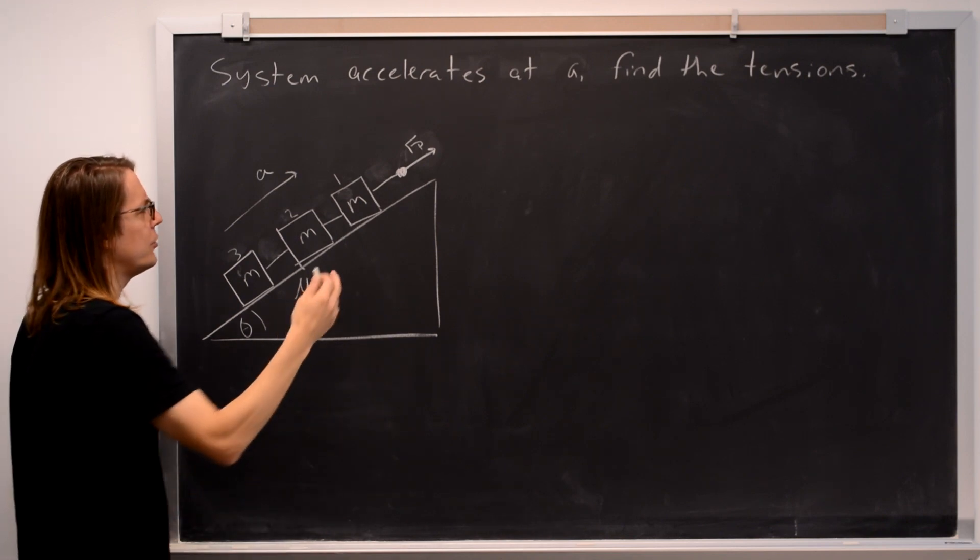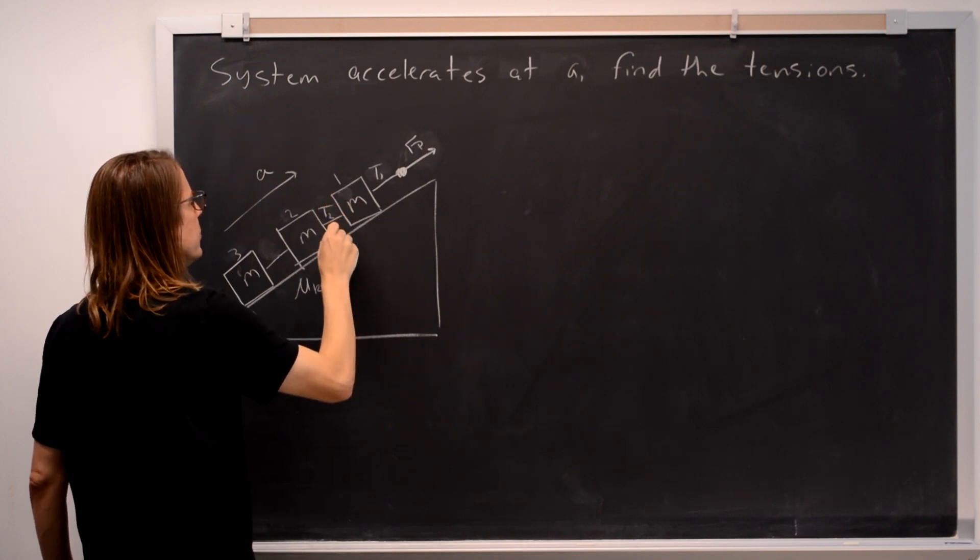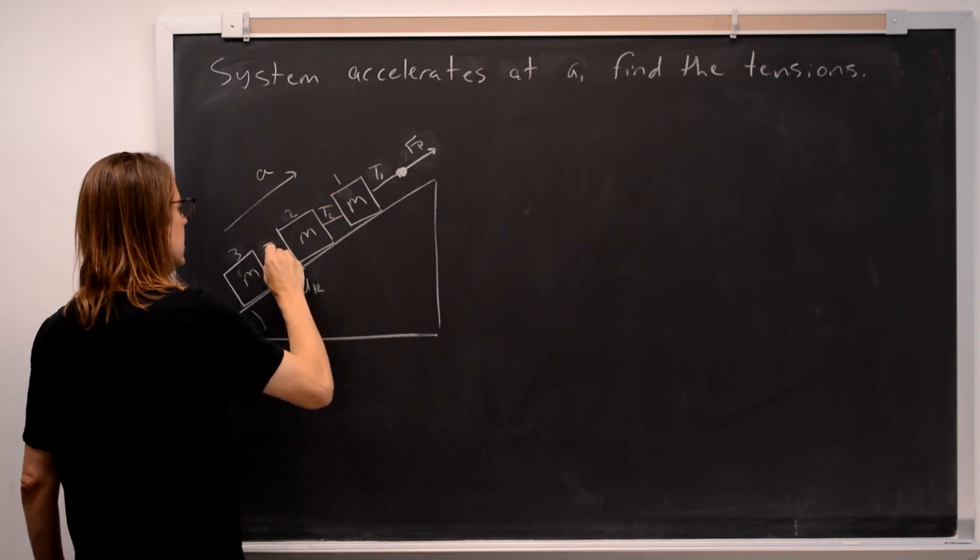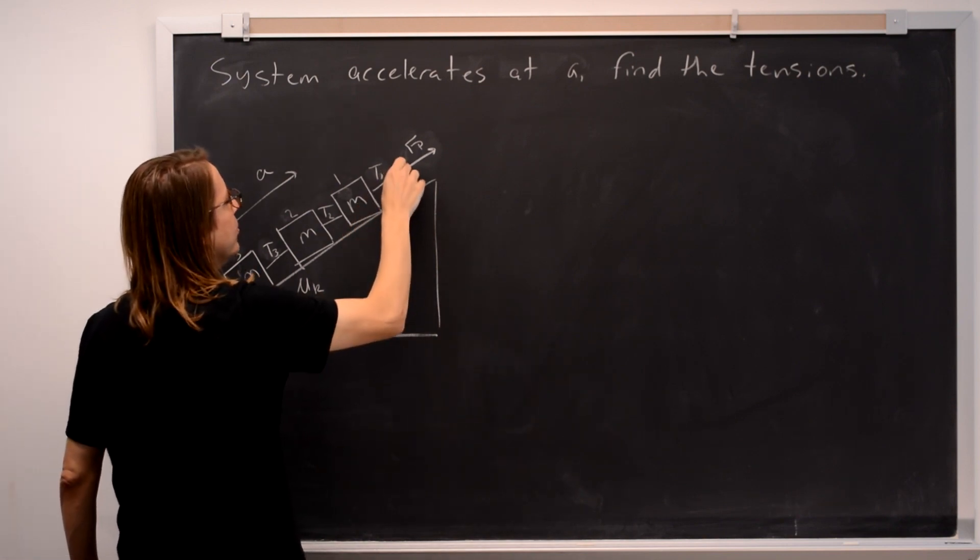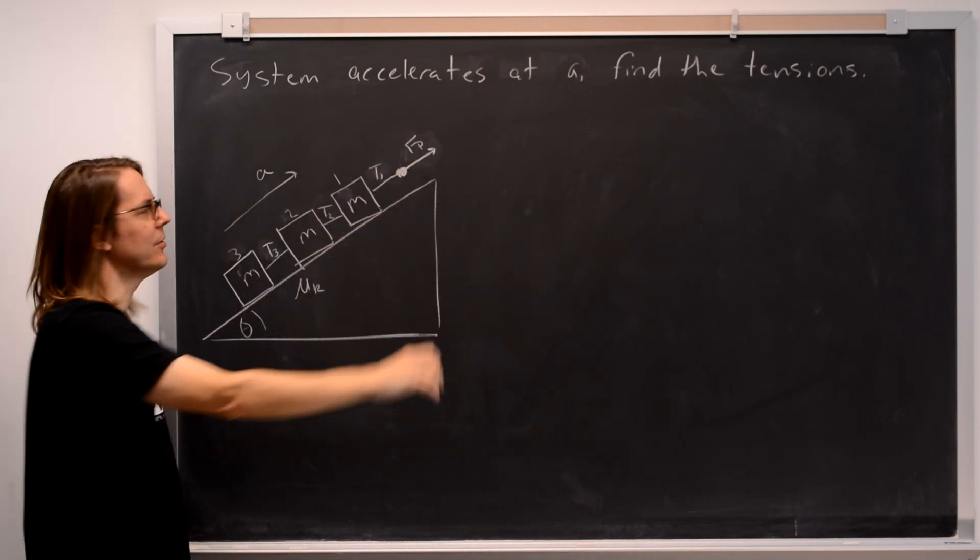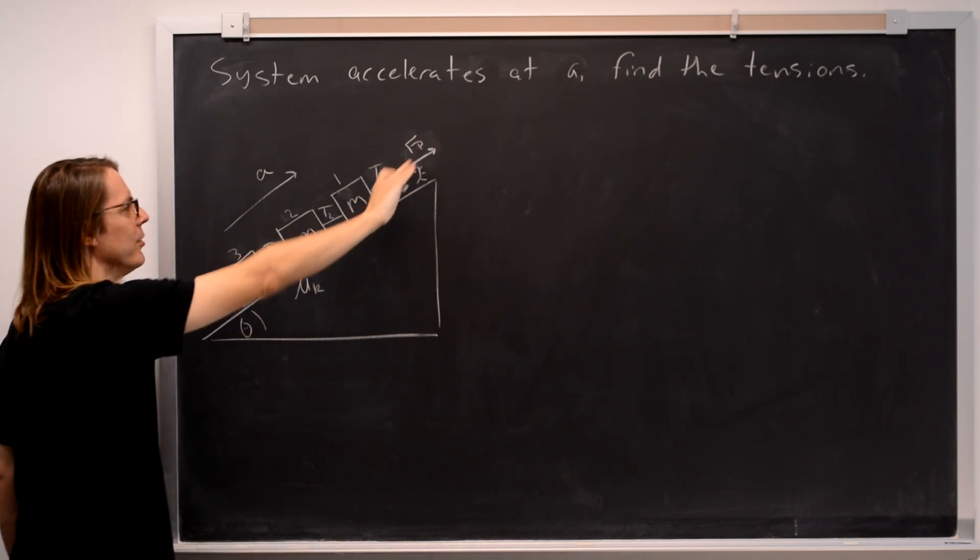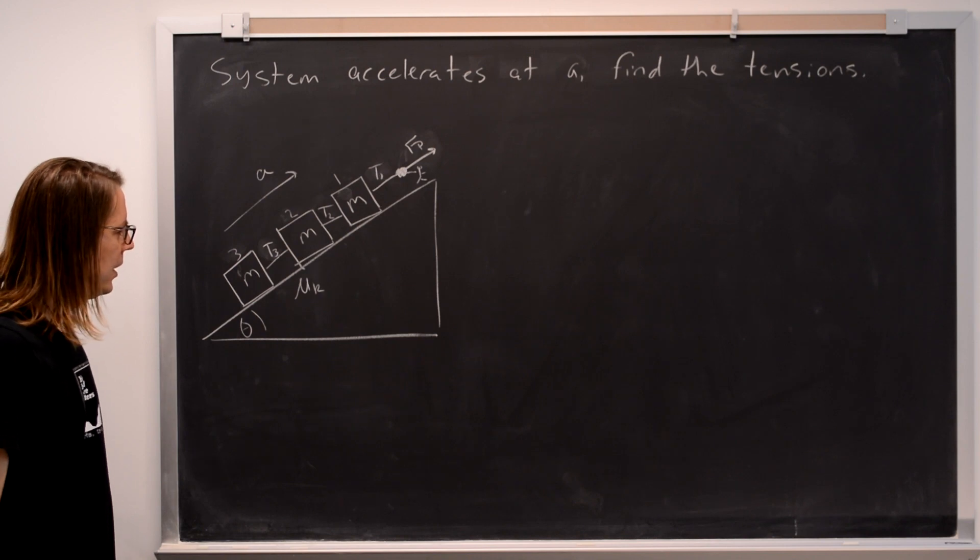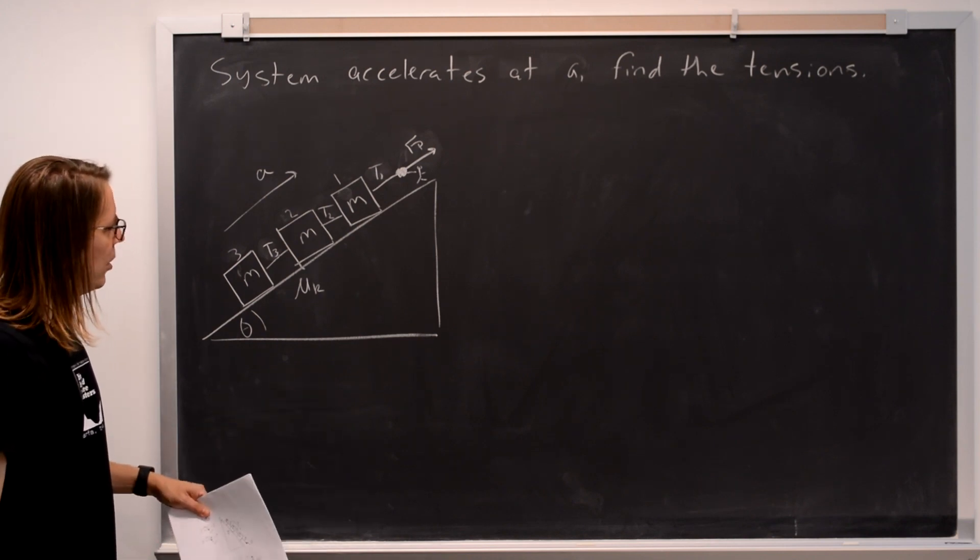And I'm going to go ahead and assume the tensions might be different, so we'll have tension 1 in this section, tension 2 in that section, and tension 3 in that section. Up here is just reminding you that something is pulling on the rope. This could be your hand, and you're pulling with force Fp to the end of the rope. So we want to figure out all these tensions.